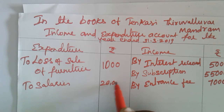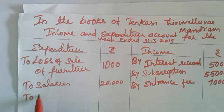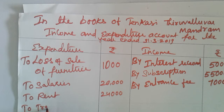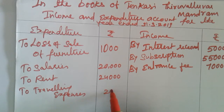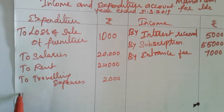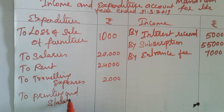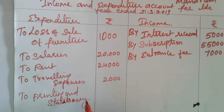Salaries 20,000. Next is rent — rent 24,000. To travelling expenses 2,000. Printing and stationery 6,000.